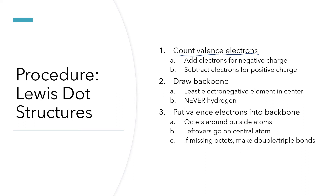If it's a polyatomic ion, we have to make an adjustment to the valence electron count. If it's a negative ion, that means it has picked up extra electrons, so we add electrons. For instance, if we're talking about the sulfate ion, which is minus two, after adding up all the valence electrons based on elements, we add another two electrons to account for that negative two charge. On the other hand, if it's something like ammonium ion with a positive charge, that means it's lost electrons, so we subtract one to have the accurate electron count.